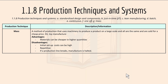Lastly, mass production is a method that uses machinery to produce a product on a large scale — all products are the same and are sold at a cheaper price, like toy manufacturing. An advantage is that materials can be cheaper in higher quantities. Disadvantages include high initial setup costs, the process is repetitive, and if a production line breaks, manufacture is halted.